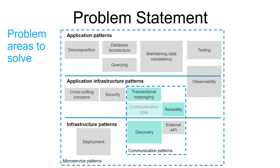IPC includes many other concerns, such as the different possible communication styles, service discovery (how a service knows the IP addresses of other services), the reliability of communication (how to communicate reliably even though some services can be unavailable), and transactional messaging — the ways of communication when implementing database transactions. All these concerns will be dealt with in the next videos, but right now we will focus on the different communication styles.